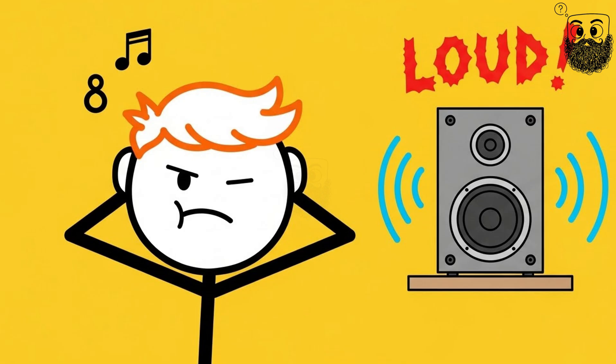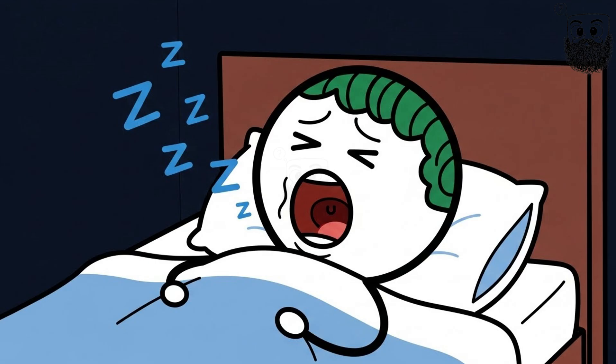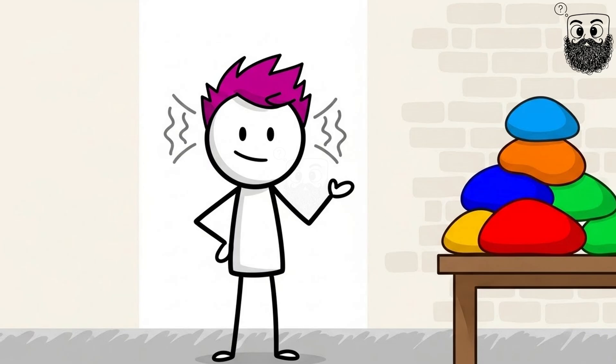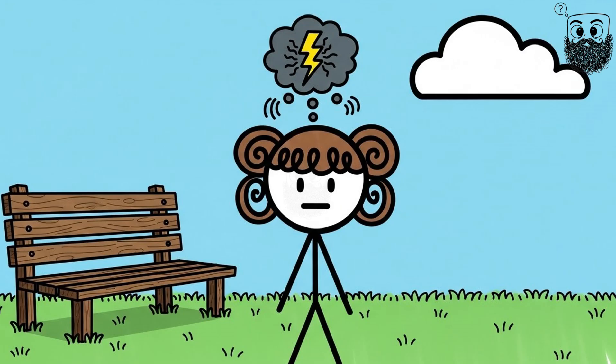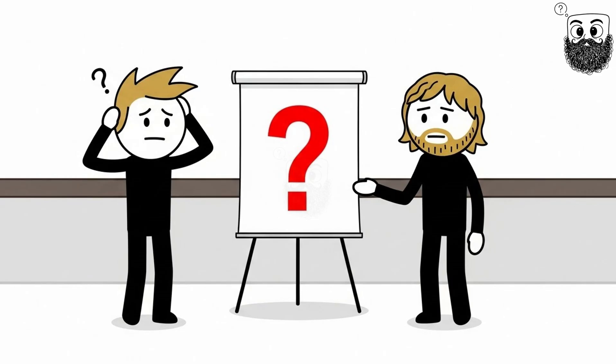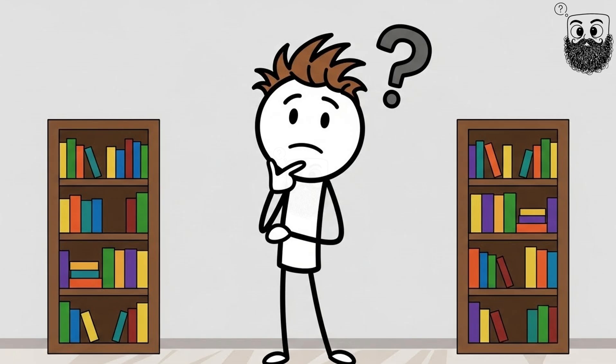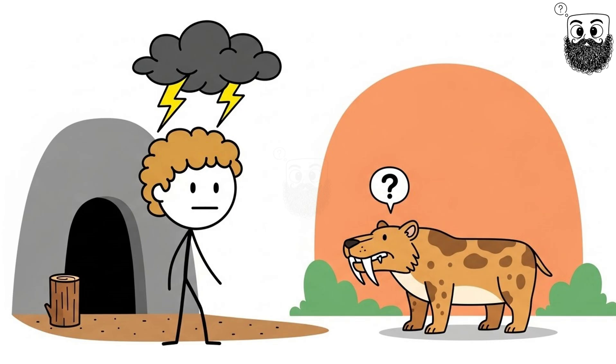You can voluntarily contract something called your tensor tympani muscle. It's this tiny little muscle hiding in your middle ear that normally acts like an automatic volume control. When loud noises hit your ears, or when you're chewing or yawning, this muscle tenses up your eardrum to protect your hearing. But for some reason you can flex it whenever you want. It's like being able to wiggle your ears, except it's happening inside your skull and sounds like a miniature thunderstorm. Here's the thing. Scientists have no clue why some people can do this and others can't. What possible evolutionary advantage could voluntary ear rumbling give you? Did our cave-dwelling ancestors intimidate saber-toothed tigers with menacing internal thunder sounds? Probably not.